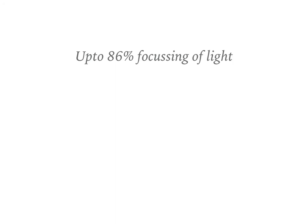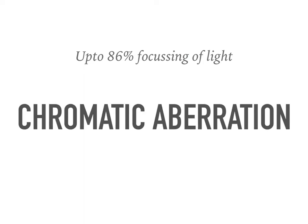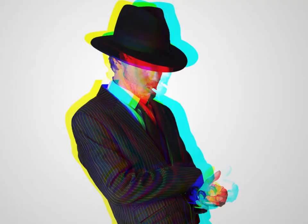Though some of the best flat lenses these days have a focusing power of up to 86% of light, a major issue faced is chromatic aberration. Chromatic aberration, which can be seen in this picture, is the inability of a lens to focus each wavelength of light to the same extent. Though this is not an issue in applications like microscopes or telescopes, it is a great problem for commercial users like cameras.